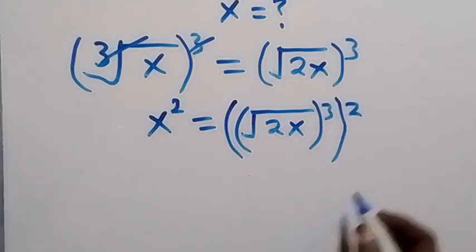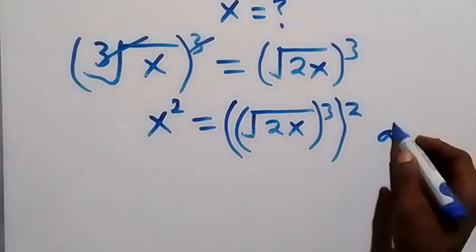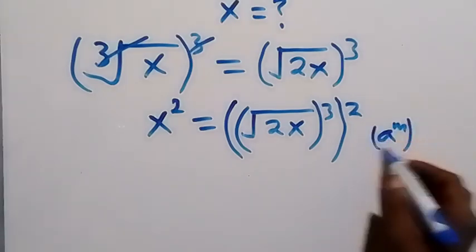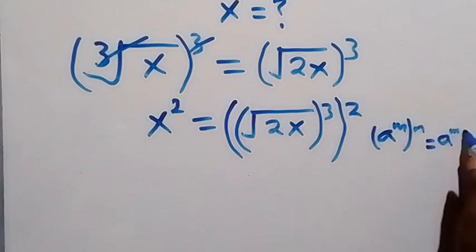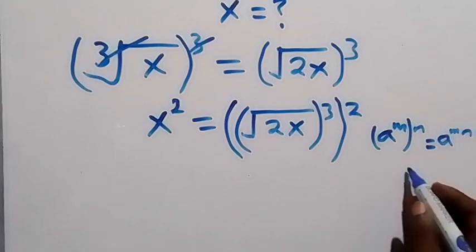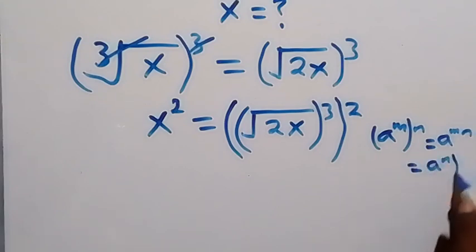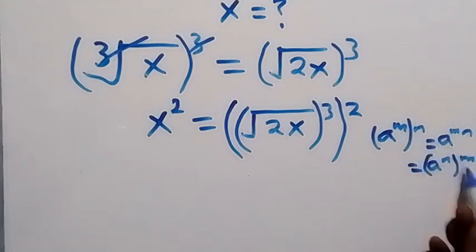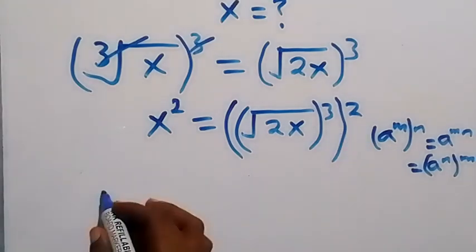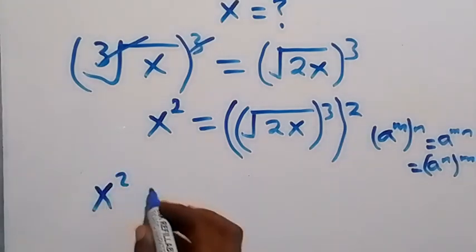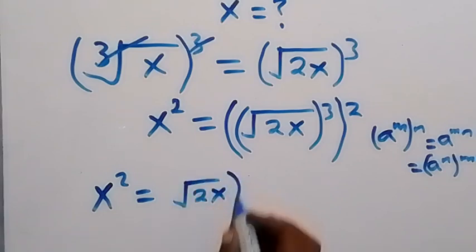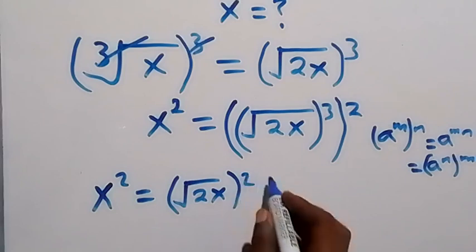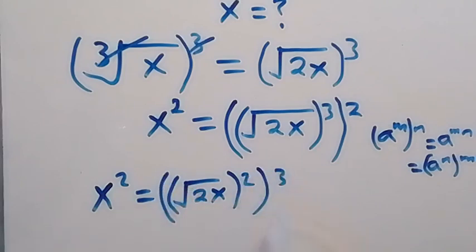From the law of indices, when we have a to the power of m, then raised to power n, this is the same as a raised to power mn. This means the powers can be interchanged. So we have x squared on this side, equal to the square root of 2x raised to power 2, then raised to power 3.